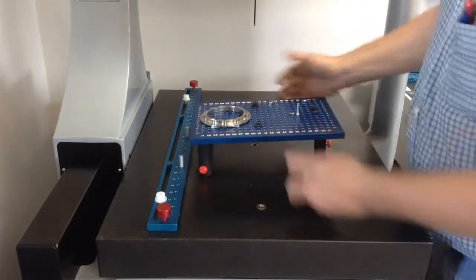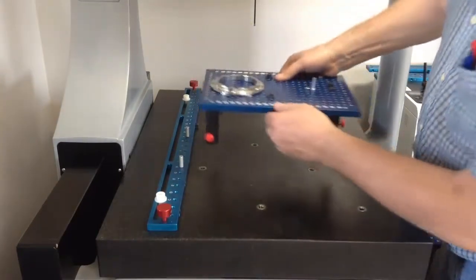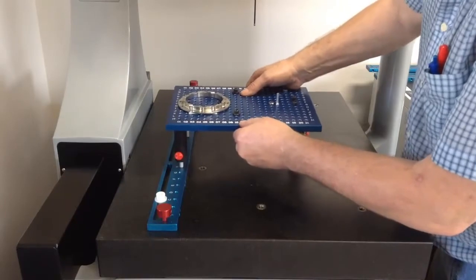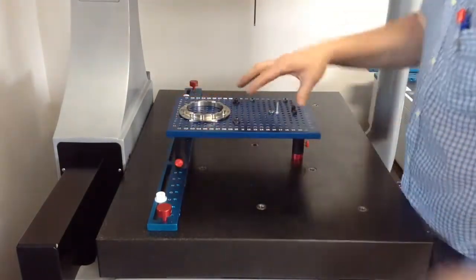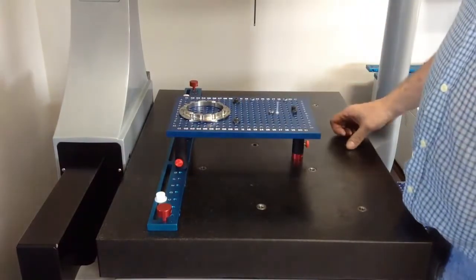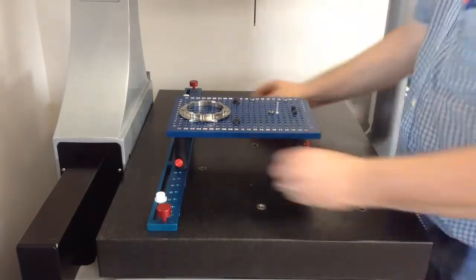We have a leg extension here. The reason for that is so we can mount this directly to the rail. On this fixture, we can mount the legs directly to these studs. Once you locate it, it locates nice and flat. Pick up the datum and you are all set to go.